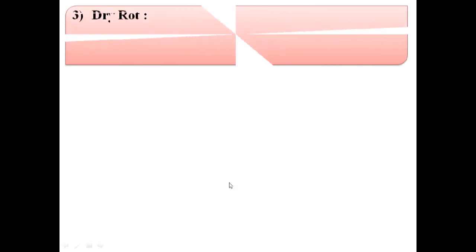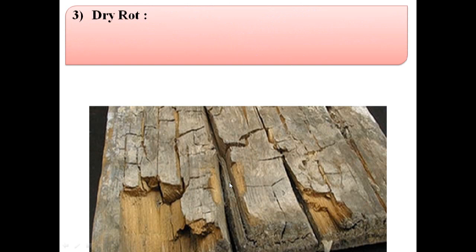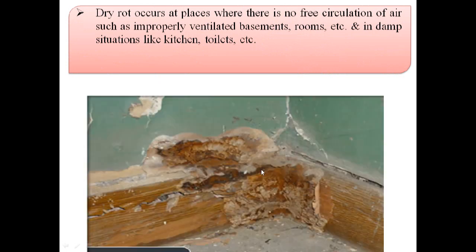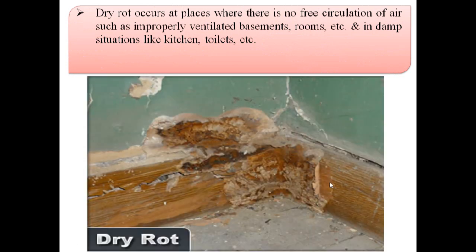Third defect due to fungi is dry rot. Fungi of certain types feed on this wood and during feeding they attack on this wood and convert it into dry powder form. This is known as dry rot. In this image we can see here this is the dry rot.